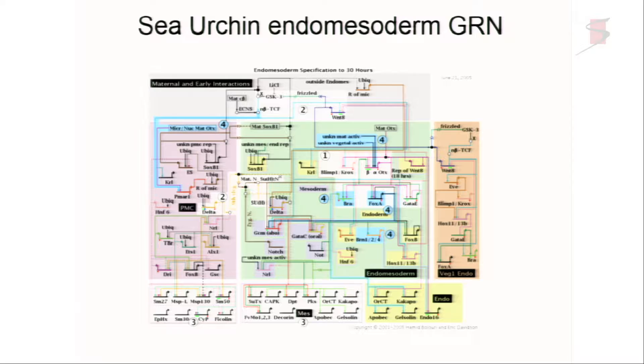The problem is that dealing with most evolutionary events in the history of life is a little bit more complicated. One of the things not immediately apparent from some of our discussions today is that focusing simply on gene regulatory networks provides a really limited view of the origin of a lot of these evolutionary novelties. And that's what I want to unpack today.